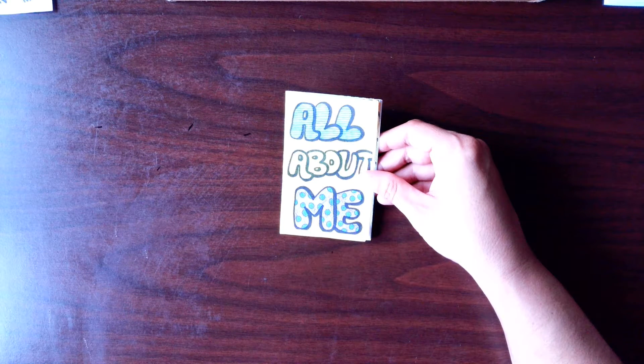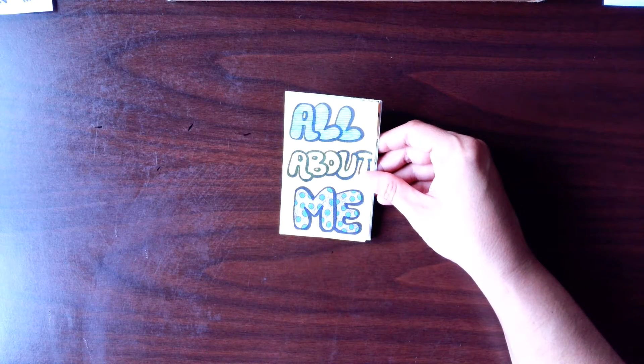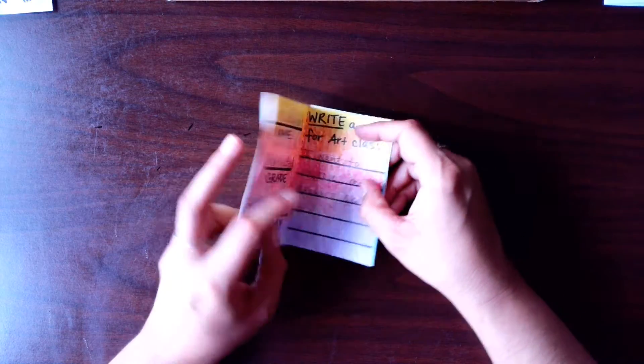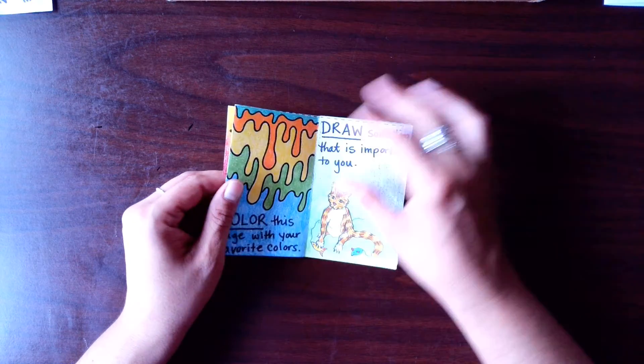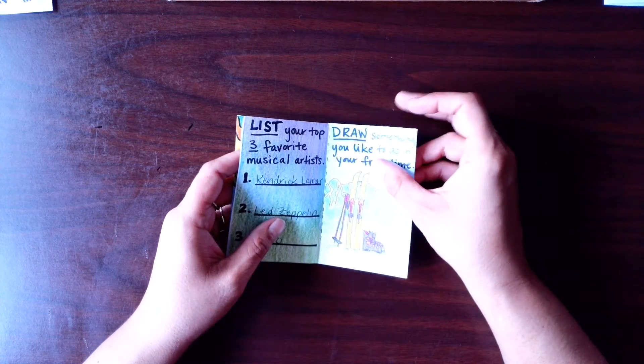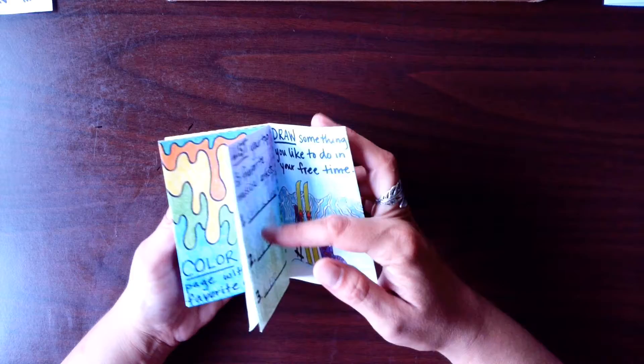Today I'm going to teach you how to fold your all about me worksheet into a little zine. A zine is a handmade book that you draw and write in and fold up to create a little book that you can flip through.